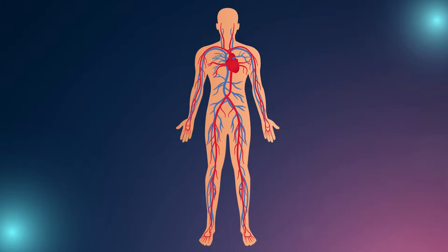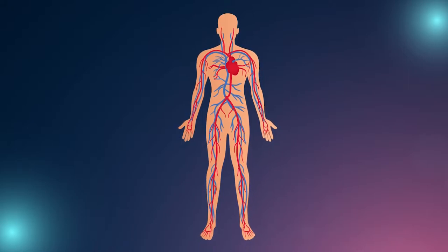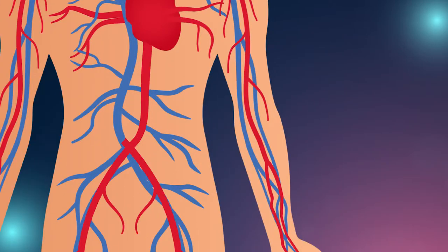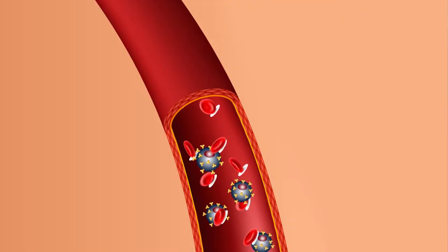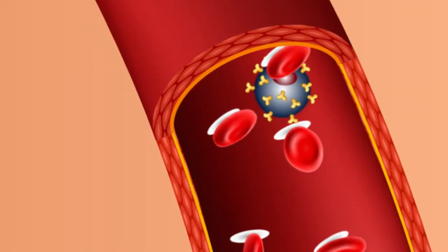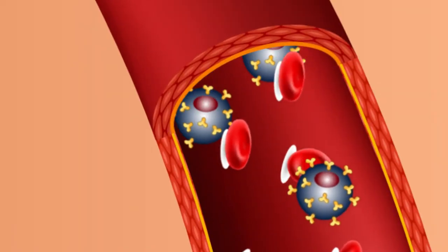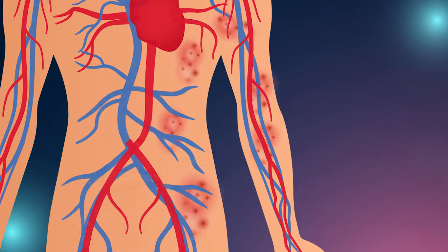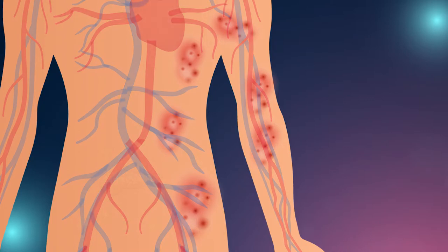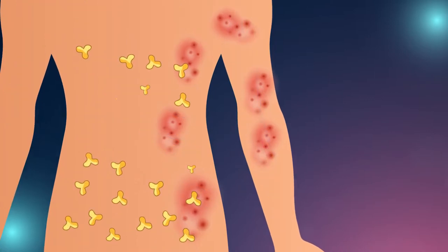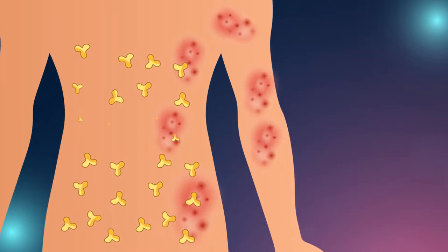IgG4-related disease, or IgG4RD, is an autoimmune disorder involving the infiltration of IgG4-specific plasma cells into the body tissue, resulting in irreversible tissue damage in multiple organs. In most patients with IgG4RD, the blood levels of IgG4 tend to be high.